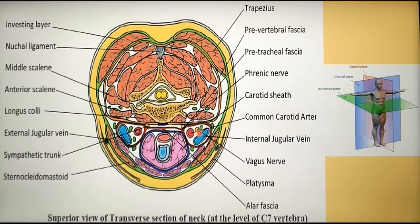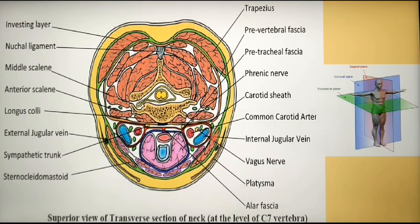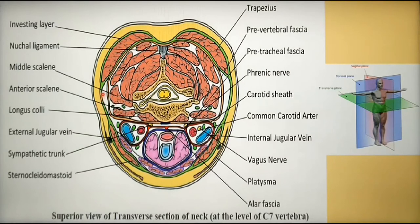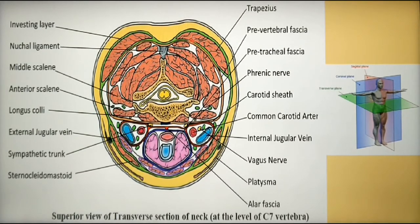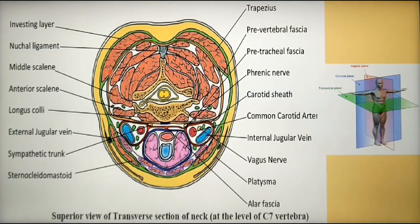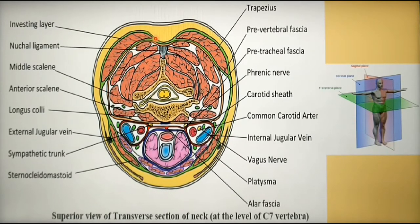As you go posteriorly, there is the carotid sheath, which is red in color, on either side. The carotid sheath encloses the common carotid artery, the internal jugular vein, and the vagus nerve. The orange colored layer is the prevertebral fascia. Different groups of muscles around the cervical vertebra are enclosed by the prevertebral fascia. And most posteriorly, you can see that the investing layer of deep cervical fascia has split itself to enclose the trapezius muscle.